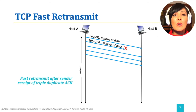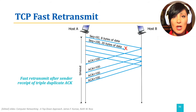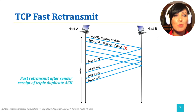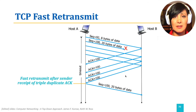If the segment with sequence number 100 is lost, host B will keep sending acknowledgements with sequence number 100. Upon receiving three of these ACKs — triple duplicate ACKs — which may arrive well before the timeout for segment 100, this will trigger the fast retransmit of the segment with sequence number 100.